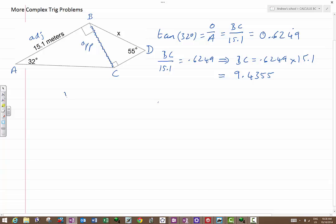So now we actually do know more information about this triangle BCD. We know that BC is 9.4355. And relative to the 55 degrees, this is obviously the opposite. And the side x we want to find, because it's opposite the right angle, clearly is the hypotenuse. So the trig ratio which involves these two, opposite and hypotenuse, is sine.